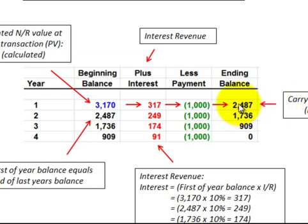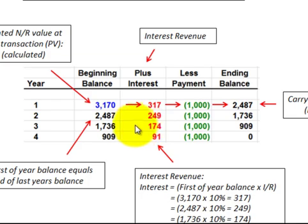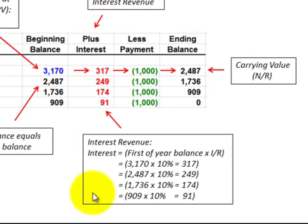The ending balance of year one becomes the beginning balance of year two at twenty-four hundred eighty-seven dollars. We multiply by ten percent to get interest of two hundred forty-nine dollars, then add it to the beginning balance and subtract the thousand-dollar payment, giving an ending balance for year two of seventeen hundred thirty-six dollars. We repeat the same steps for years three and four, calculating interest revenue by taking the beginning-of-year balance times the interest rate.